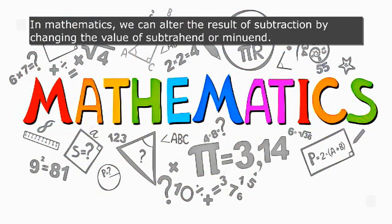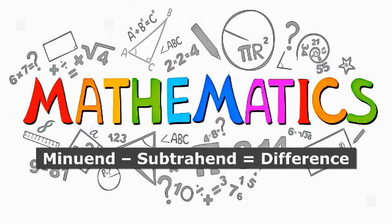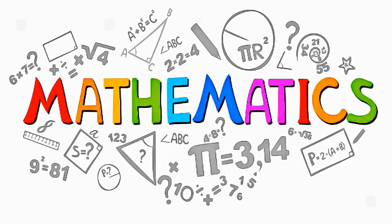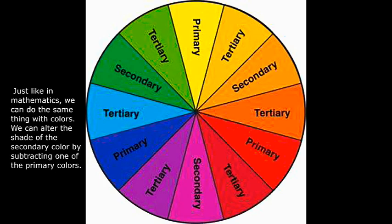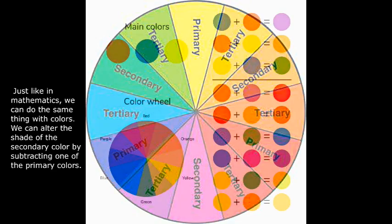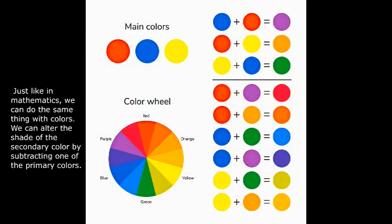In mathematics, we can alter the result of subtraction by changing the value of the subtrahend or minuend: minuend minus subtrahend equals difference. Just like in mathematics, we can do the same thing with colors — we can alter the shade of a secondary color by subtracting one of the primary colors.